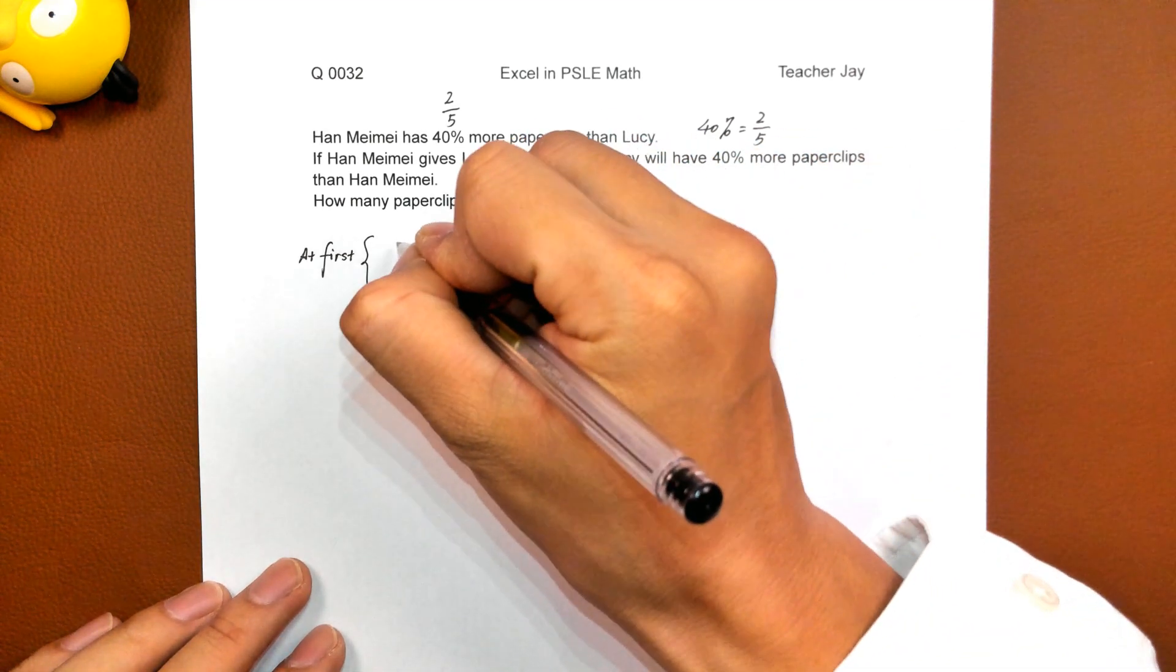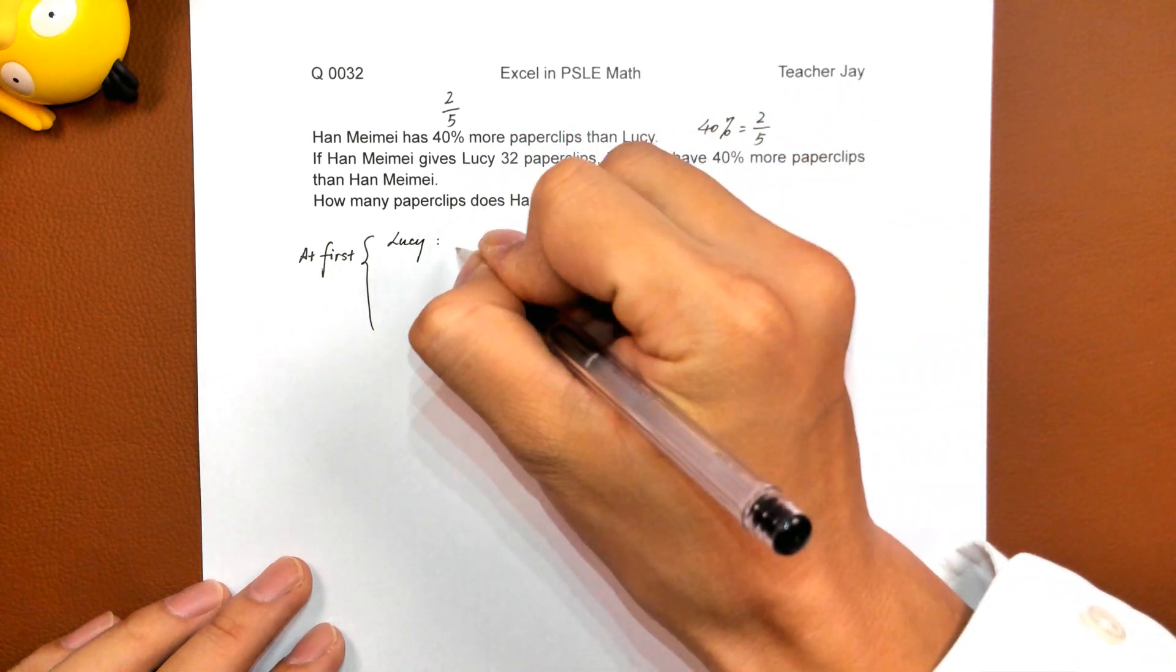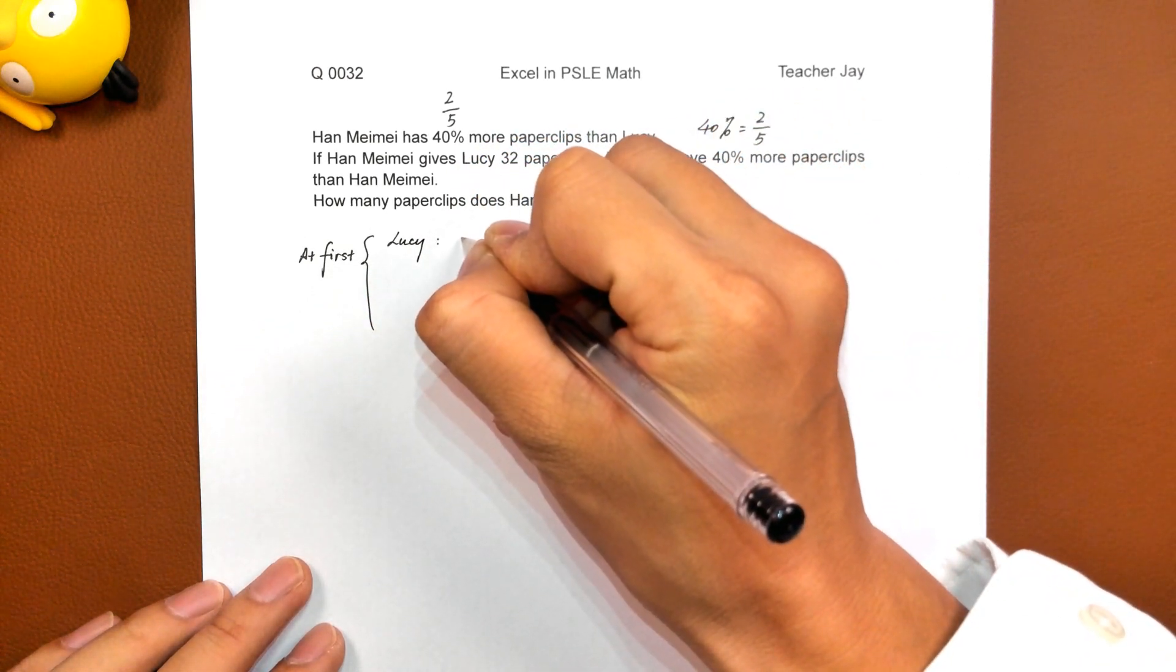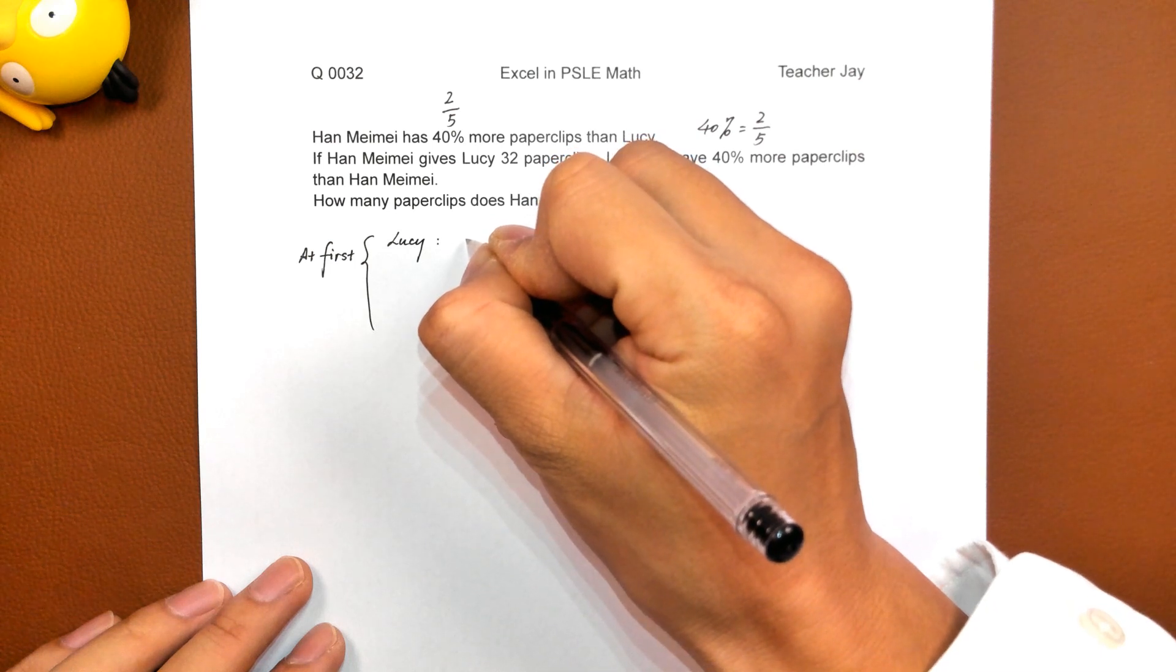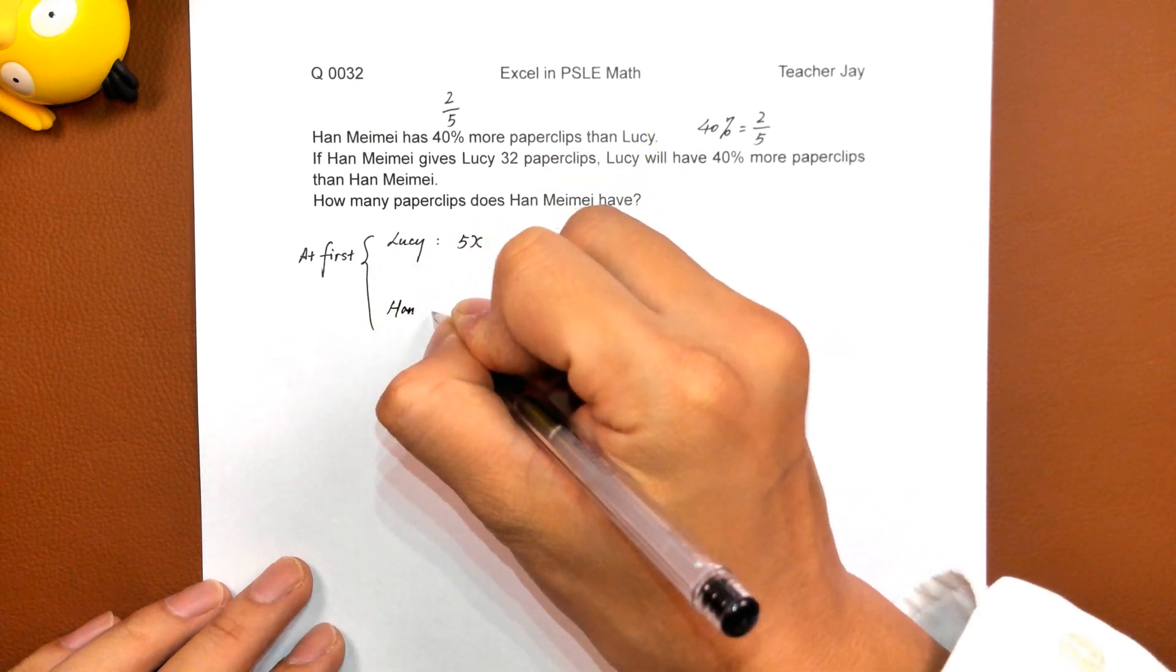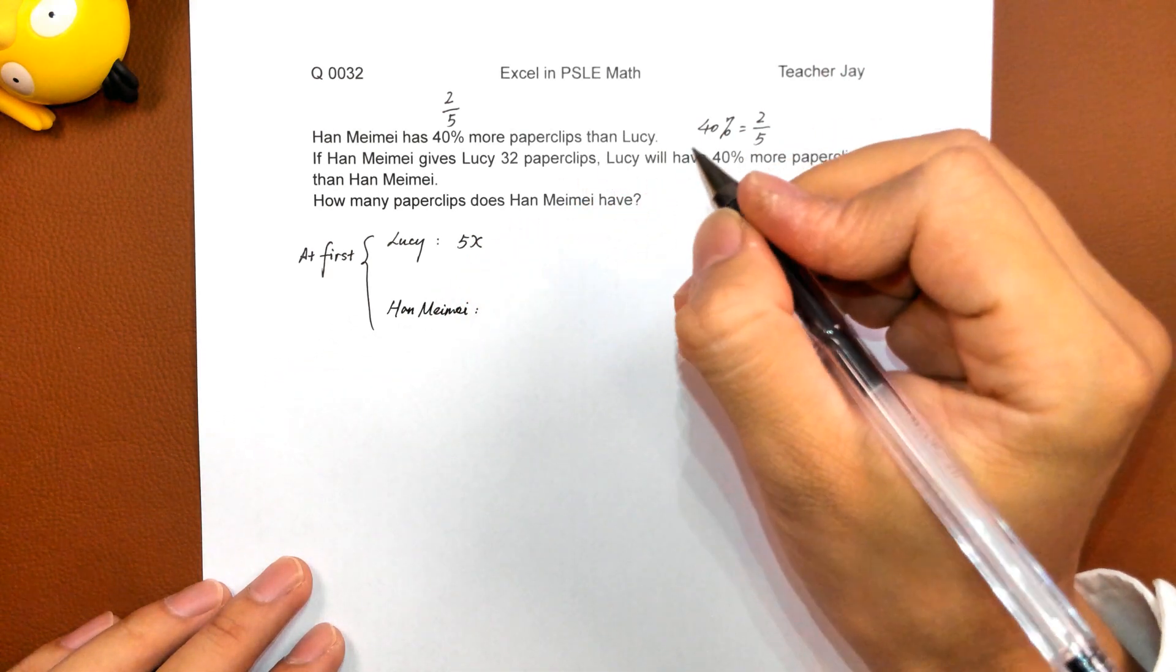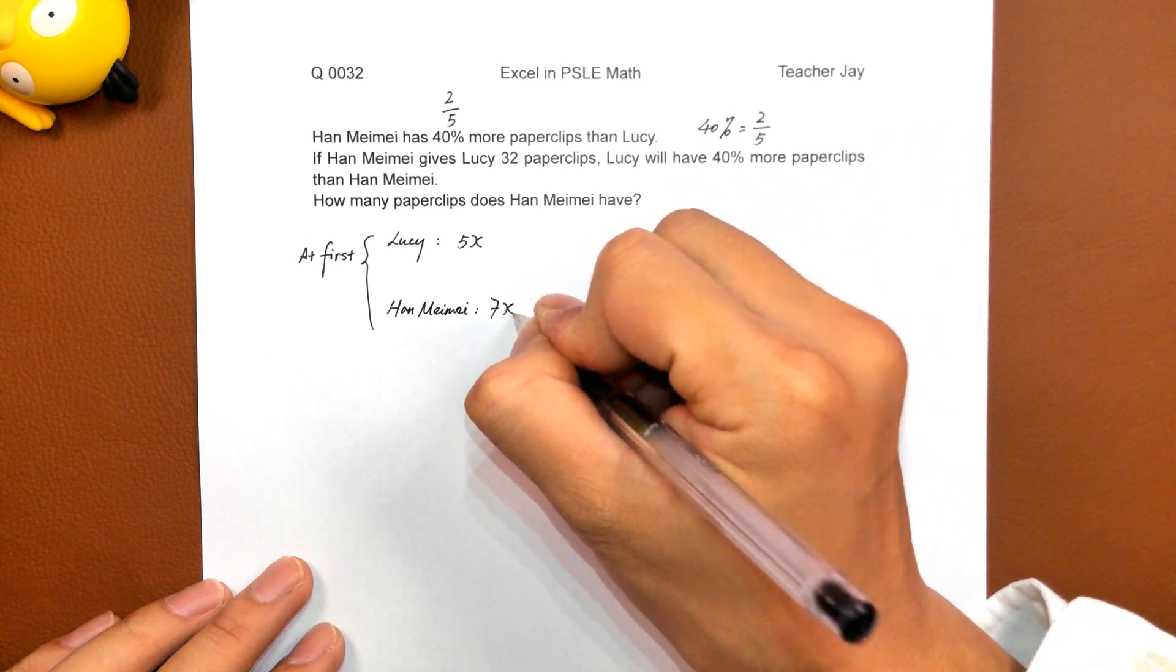So, at first, the number of paper clips that Lucy had at first is 5x. Then Han Mei Mei will have 7x.